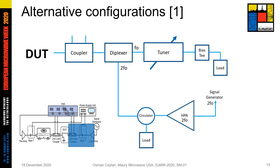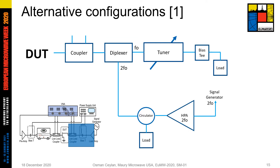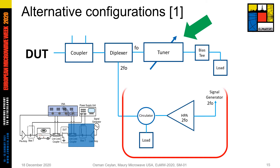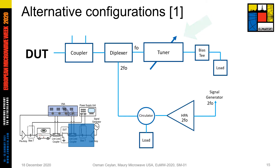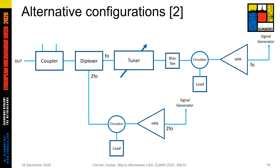It's also possible to apply hybrid load pull configurations for fundamental and second harmonic frequencies simultaneously. The key component in this configuration is the diplexer. It splits the signal and provides independent control of the signals. In this configuration, load pull for the fundamental frequency is done by the tuner, and the second harmonic tuning is done by the active load pull. In another configuration, the load pull at the fundamental frequency has a hybrid structure, and the load pull at the second harmonic frequency is still an active load pull configuration.